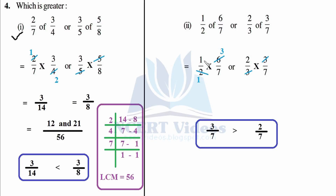The other fraction: 3 and 3 cancel, giving 2 over 7. Here the denominators are the same, so no LCM needed. 3 is greater than 2, meaning 1/2 of 6/7 is greater than 2/3 of 3/7. That was your fourth question.